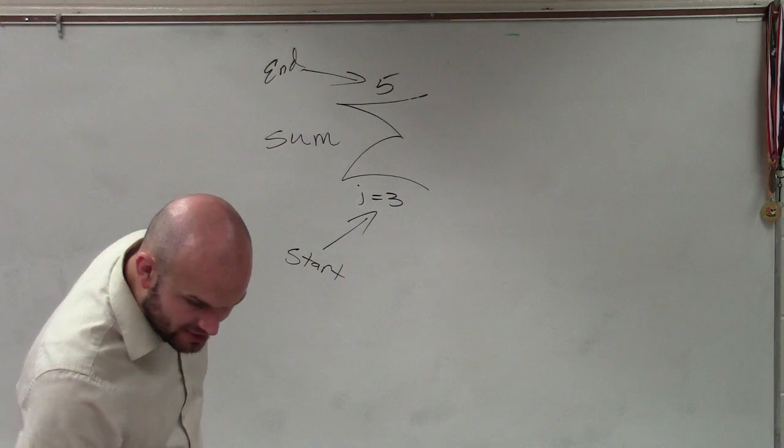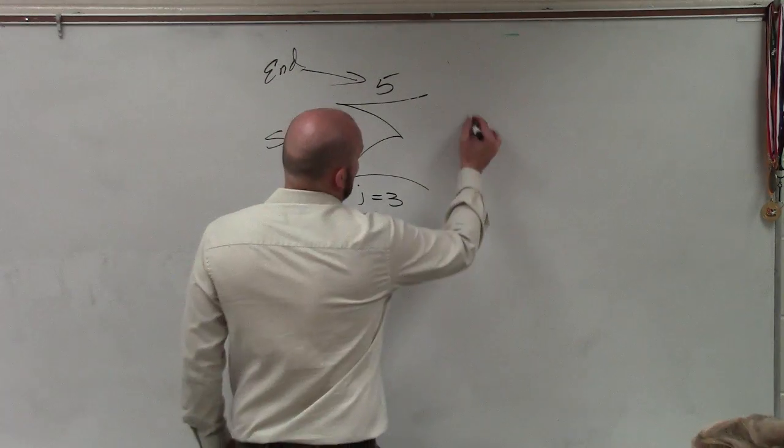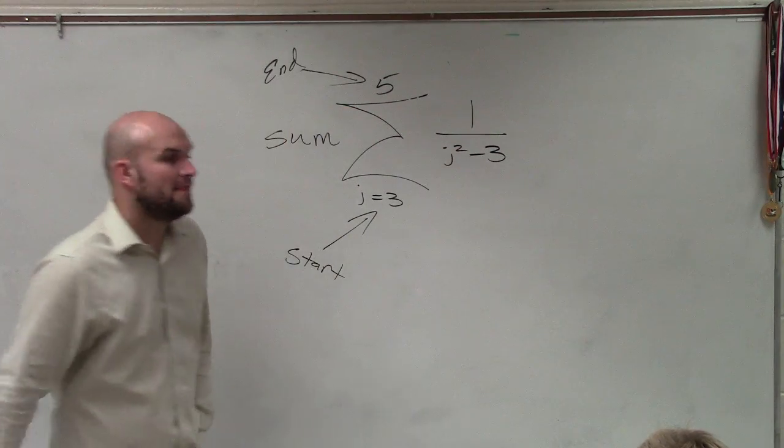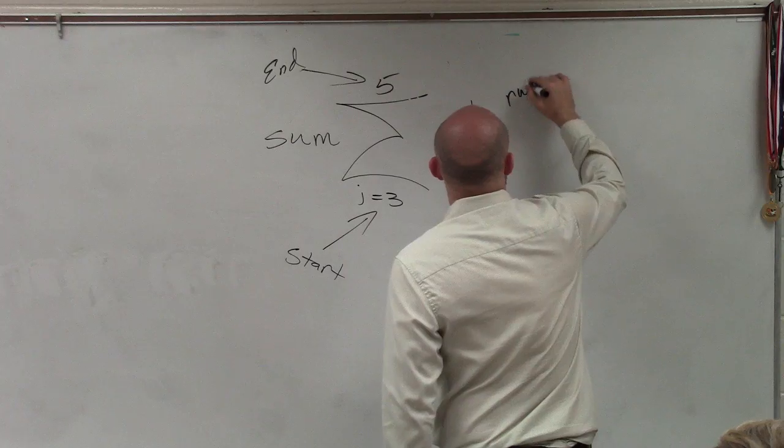And there also is going to be a rule: 1 over j squared minus 3. That is what we call the rule.